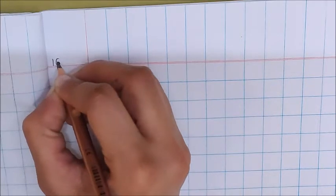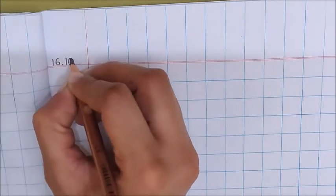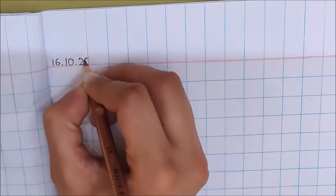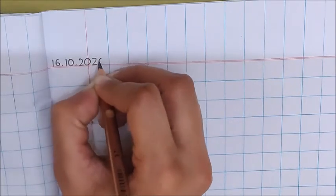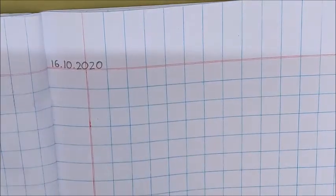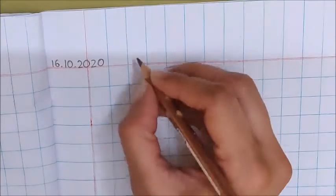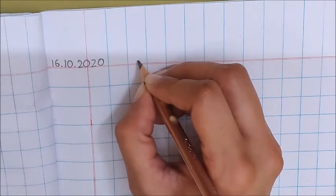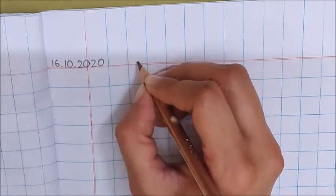16 dot 10 dot 2020. Now children, on the red line write down the heading Missing Numbers. You can try to do this with me children.